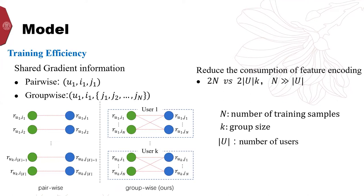On the contrary, the item i1 in the left subfigure can only obtain the gradient information from the pair u1 i1 and u1 j1. Moreover, our group-wise optimizer can reduce the consumption of feature encoding.